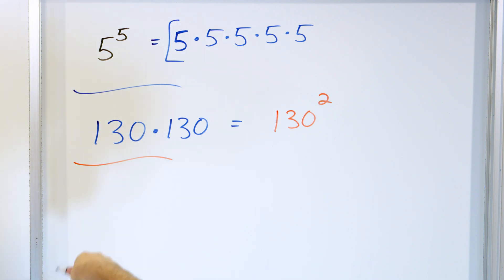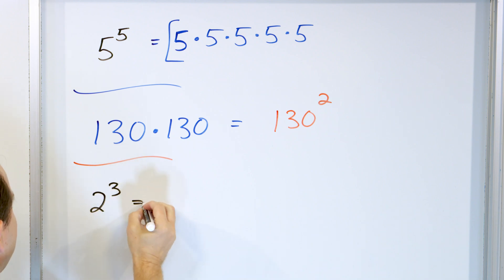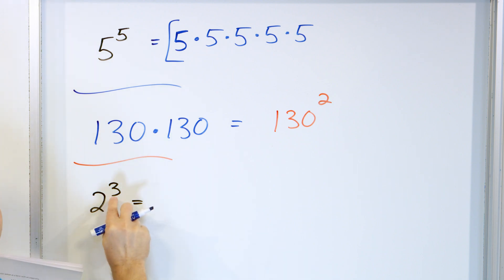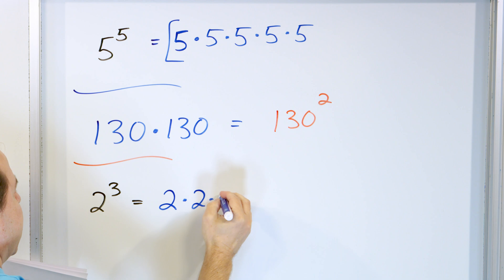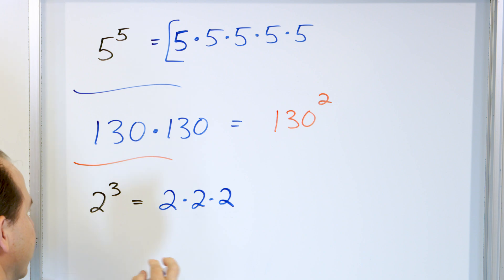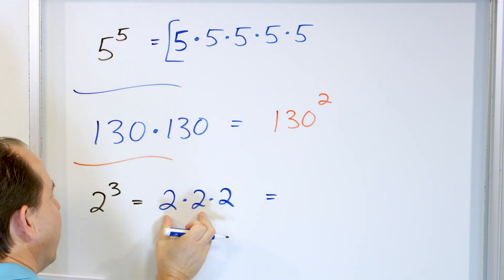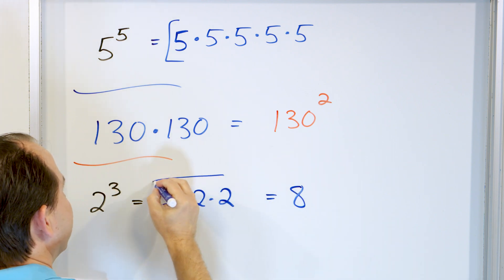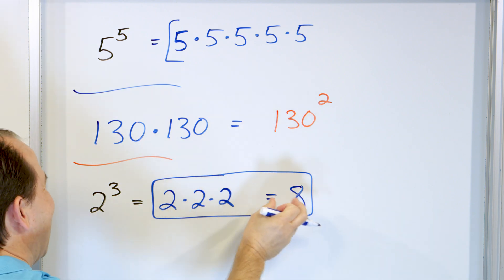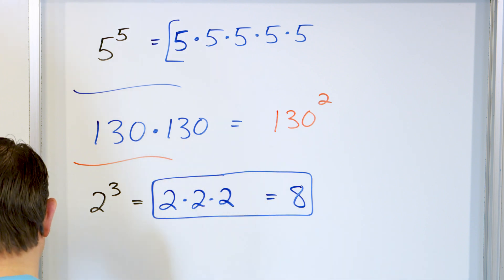For the last two problems, let's write it out and also calculate it. What about two to the power of three? Let's write this as a product of factors and calculate it. This is two, the base, times itself times itself again — there are three of them. Two times two is four, and four times two is eight. So two cubed equals two times two times two, which equals eight.